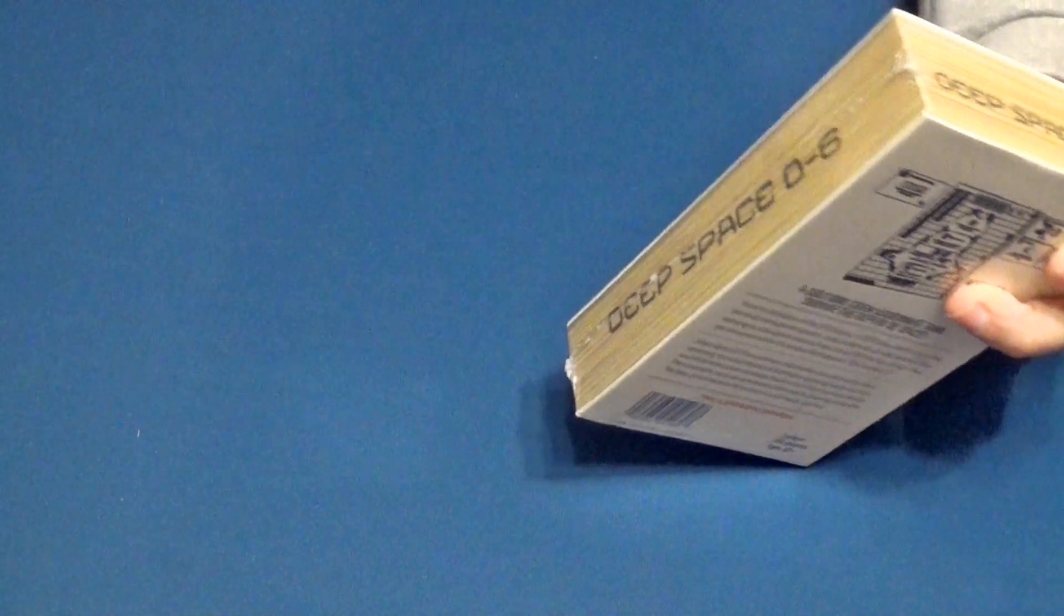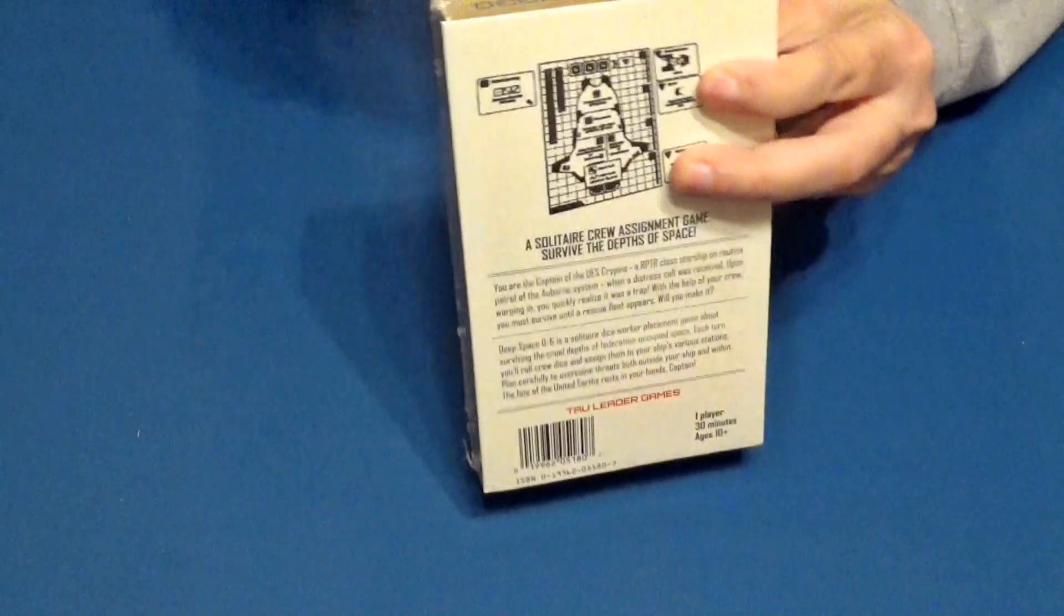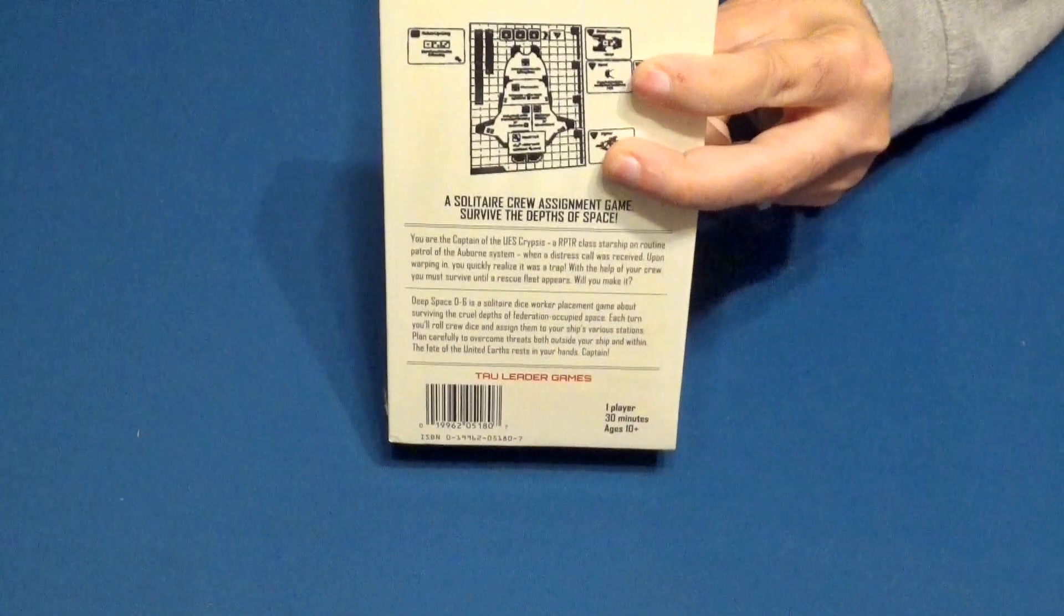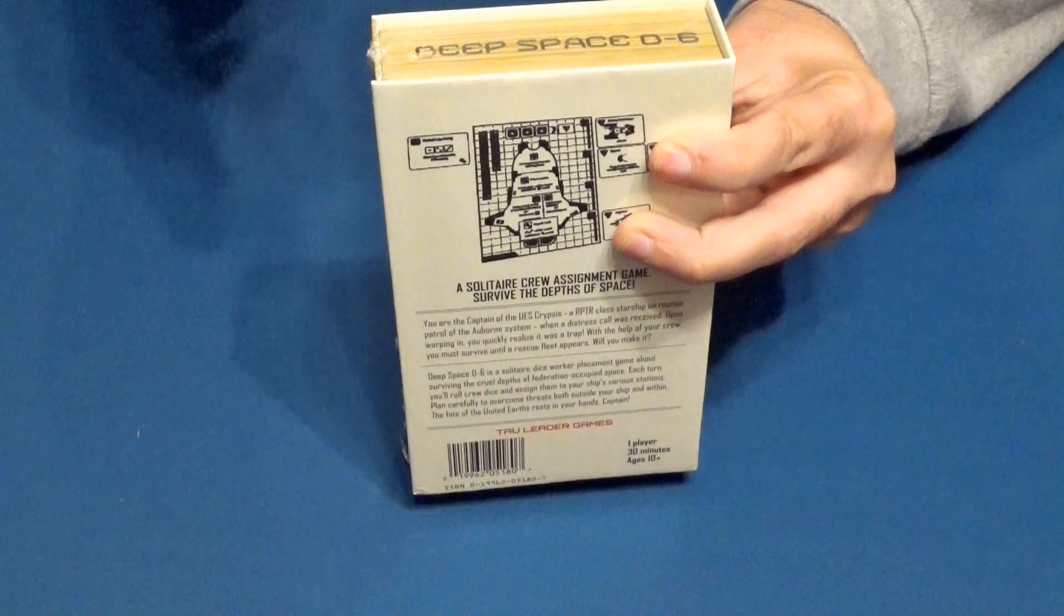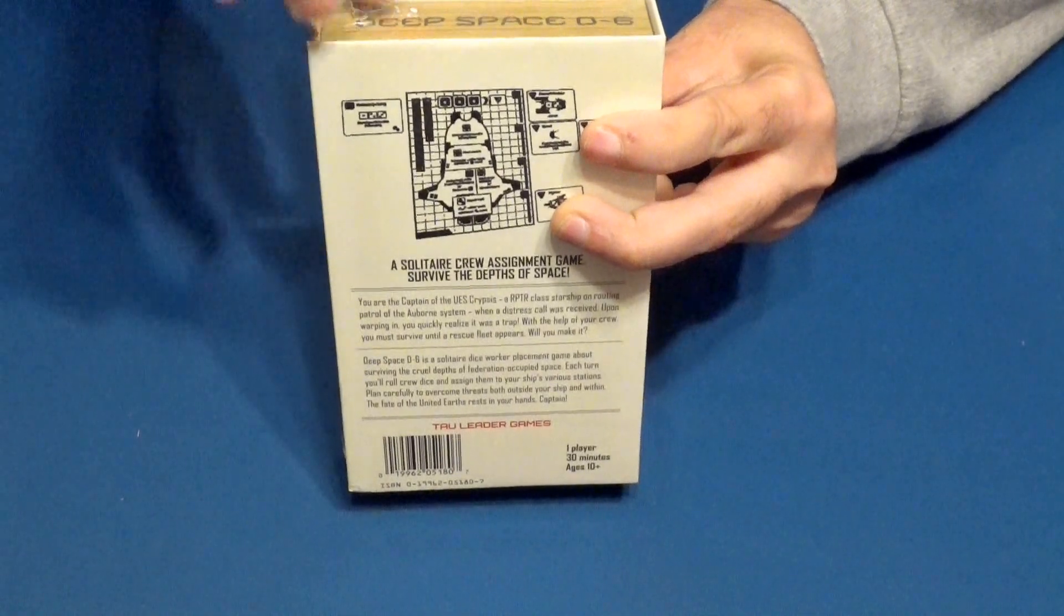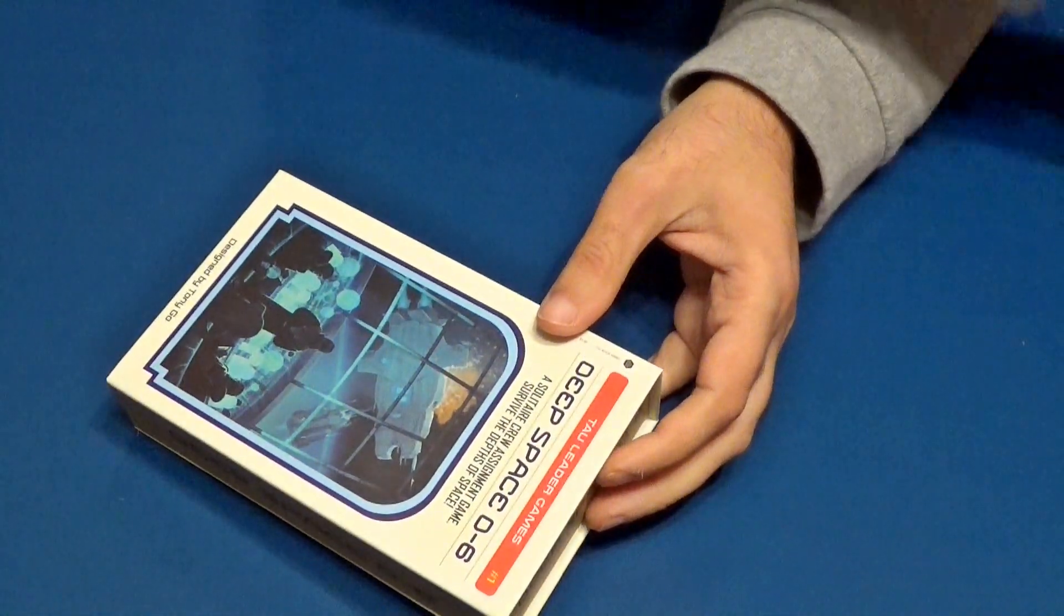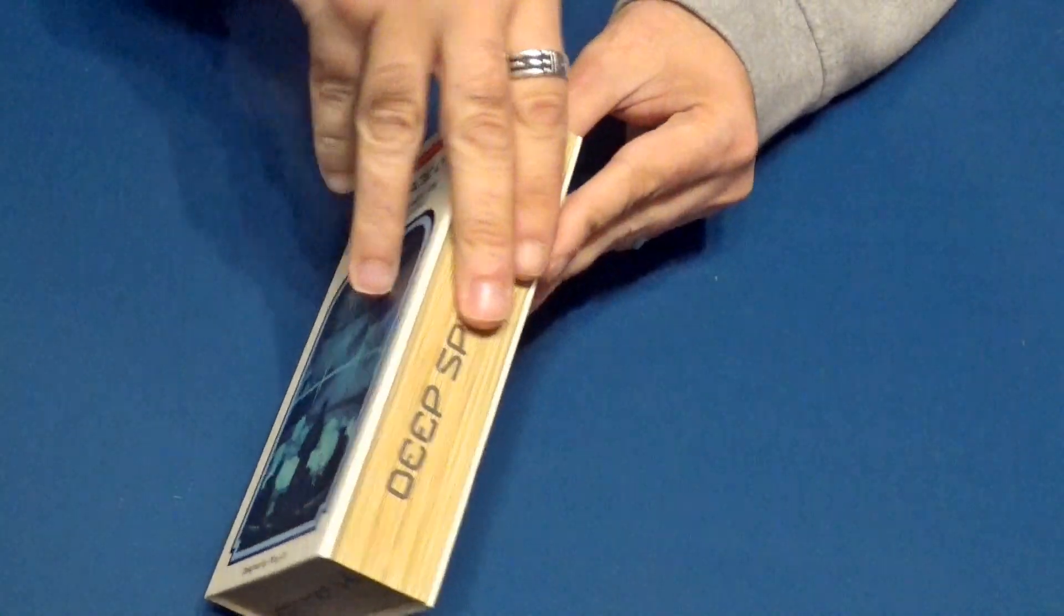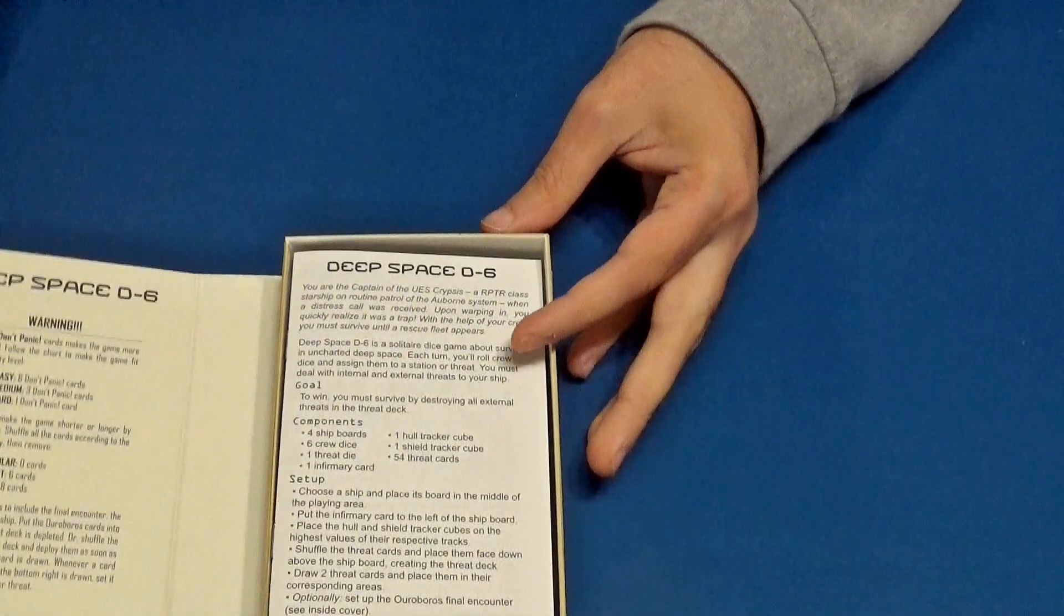Vamos a proceder ya a abrir la caja. Hacemos un corte aquí. Aquí estamos, tenemos el corte hecho, quizás lo tengo que hacer un poco más profundo. Ahora creo que ya estará. Tenemos el plástico fuera. Y vemos que esta caja tiene como un cierre de aquí, imantado. Está muy bien.